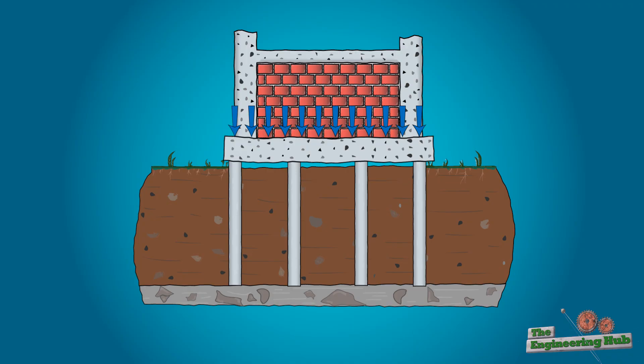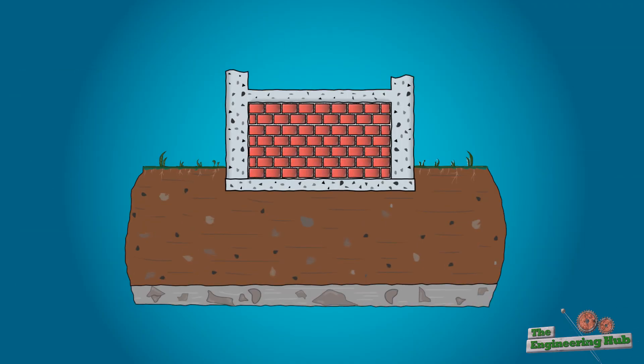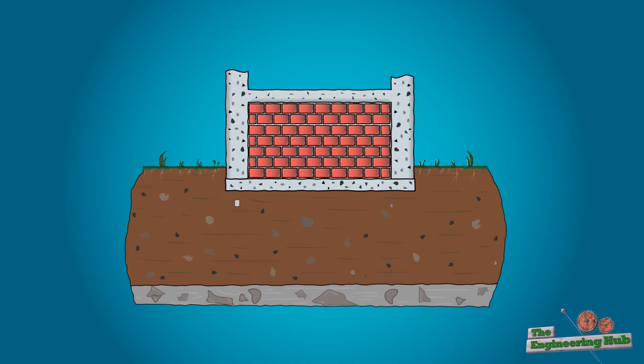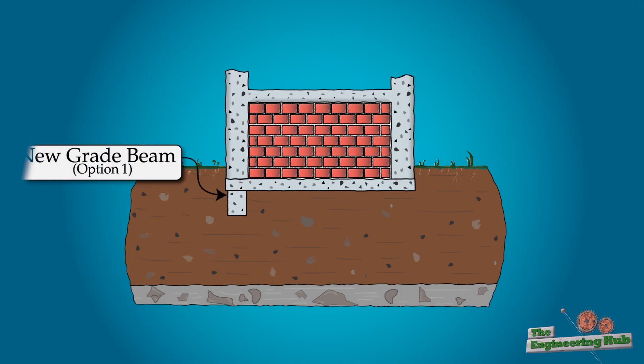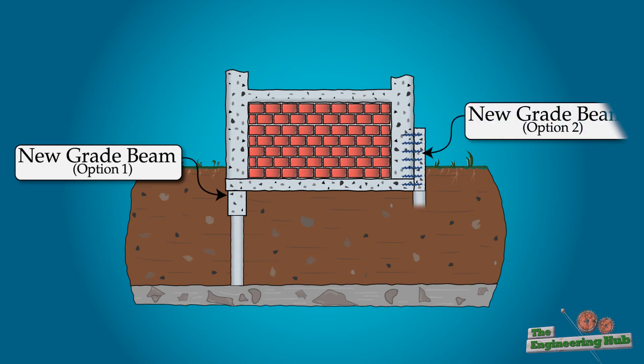In the case of a slab on grade foundation, the remedial measures are much more difficult, especially if the slab has failed due to lack of stiffness. Underpinning a flexible slab would punch right through the concrete, creating even more issues. In some cases, beams can be constructed under the slab and be used as supporting points for underpinning, but this is a difficult and risky task.